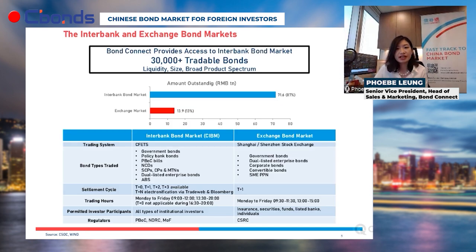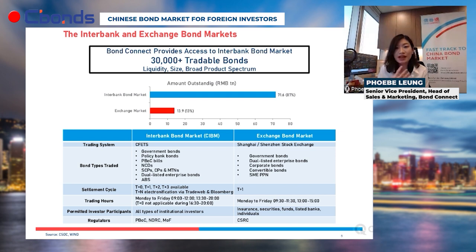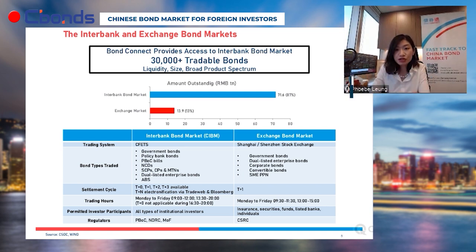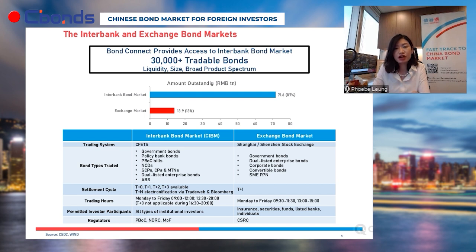When looking at the China interbank bond market, there are two different bond markets onshore: the interbank bond market and the exchange bond market. The interbank bond market — the CIBM — has 87 percent of the total bond market liquidity, while the exchange market has only 13 percent. Bond Connect and the CIBM agent model provide access for international investors directly into the CIBM, where all financial institutional investors are located.